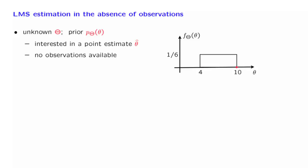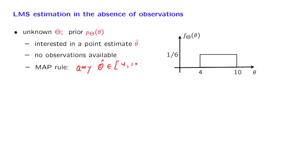We can use the rules that we have already developed. For example, the maximum a posteriori probability rule — what would it do? In this case, since there are no observations, the posterior distribution of theta is the same as the prior. There are no observations that would change the prior. So we need to find the point at which this distribution is highest. Because this distribution is flat, the MAP rule does not give us a unique answer. Any value of theta inside the interval from 4 to 10 would be an acceptable answer, so this rule is not particularly helpful.